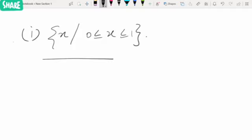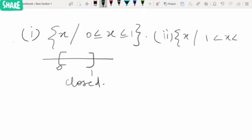The second one: the set of all x from 1 to 8, but without 1 and without 8. So it is the open interval (1, 8), which is open. The next question is whether the set [0, 1] ∪ [2, 3] is open or closed.